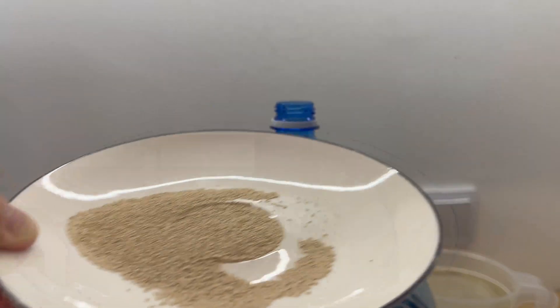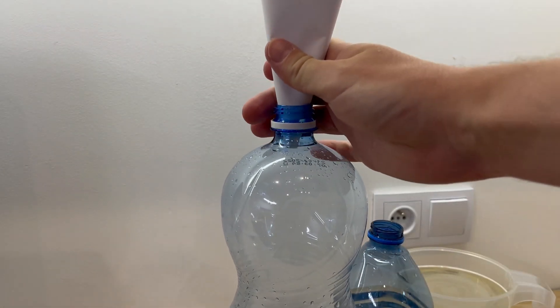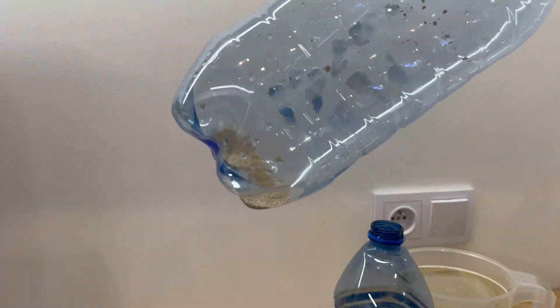Now it's time to put our yeast into the bigger bottle. The best way to do it is to use a funnel, but if you don't have one just use a sheet of paper. And just like that our yeast is inside. Of course if you prefer you can use fresh yeast, but for me the dry powder yeast is just more convenient.